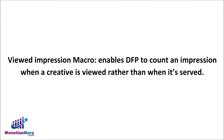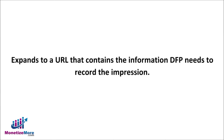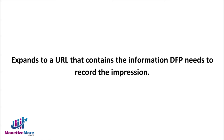The Viewed Impression Macro enables DFP to count an impression when a creative is viewed rather than when it's served. Use this macro for interstitial or similar creatives. It expands to a URL that contains the information DFP needs to record the impression, working in conjunction with signals in the ad tag that let DFP know not to count the impression immediately. For GPT, this applies to tags that include delayed impressions.